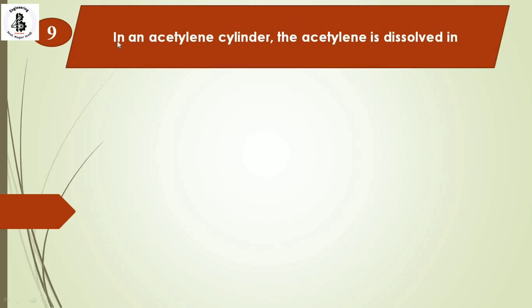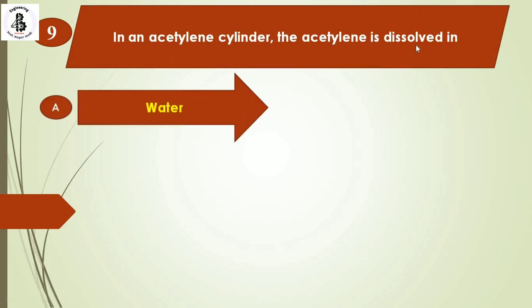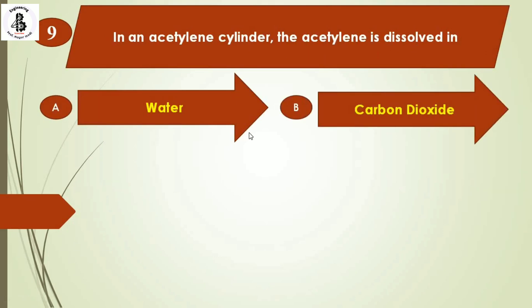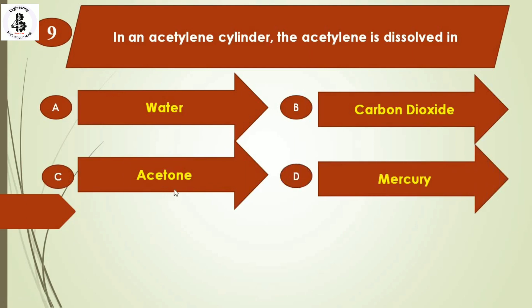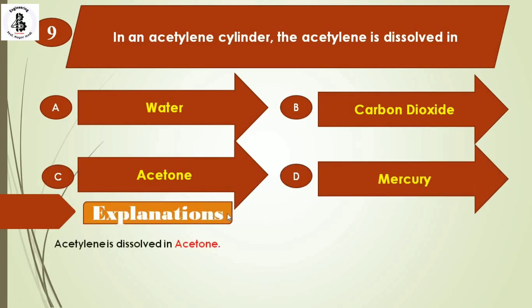The next question: in an oxy-acetylene cylinder, acetylene is dissolved in — Option A: water, Option B: carbon dioxide, Option C: acetone, Option D: mercury. In an acetylene cylinder, acetylene is dissolved in acetone. The right answer is Option C.